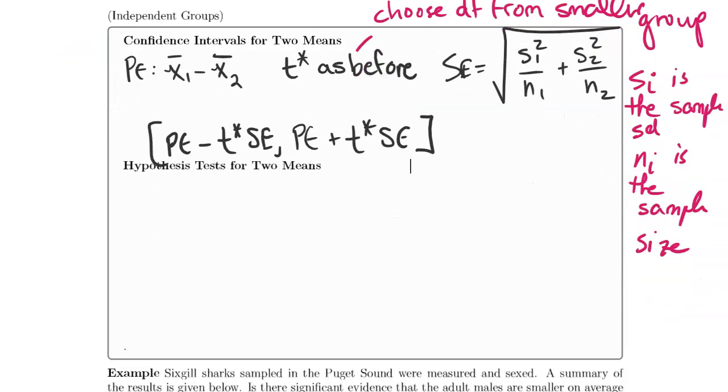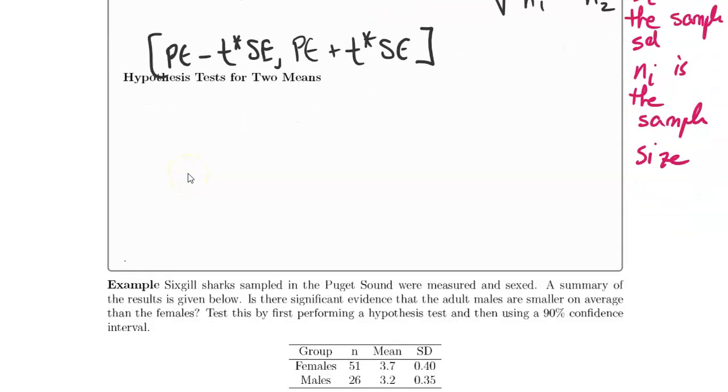In the case of hypothesis testing, everything is pretty similar as before. Our null hypothesis, as in the two proportion case, is that the two means are equal or that their difference is zero.